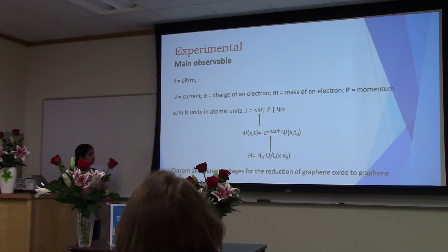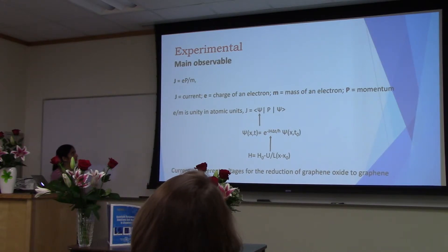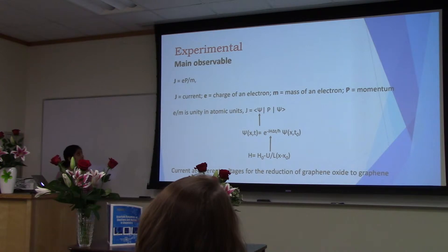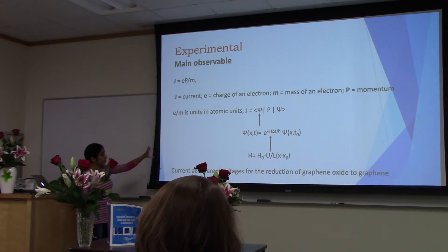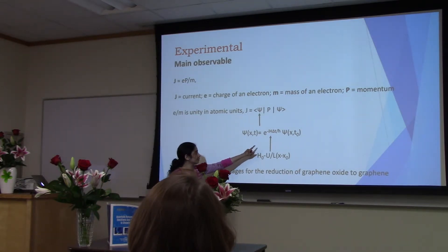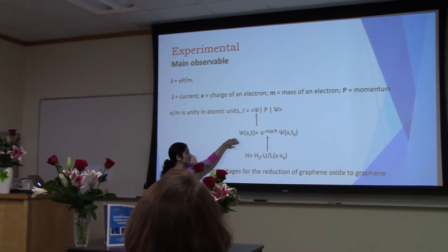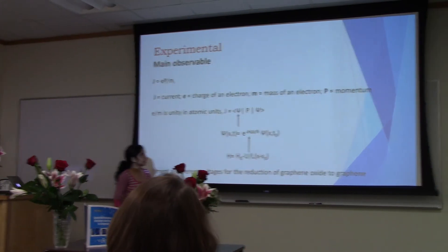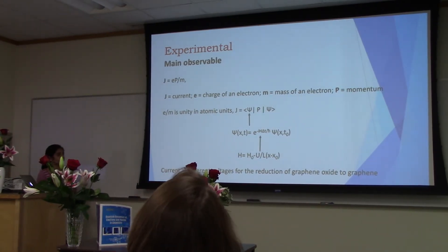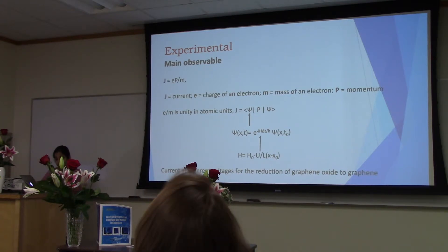The main observable in this study was the electric current, which we relate to electronic charge, momentum, and the mass of an electron. In atomic units, the charge-to-mass ratio is considered one, so we can relate current J directly to momentum. Using the momentum observable and the time-dependent wave function with an evolution operator containing the Hamiltonian — which comprises both voltage and potential — we varied the voltage to see how current changes, and also how different oxygen concentrations influence conductivity.